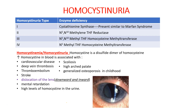Coming to homocystinuria: Type 1 is due to deficiency of cystathionine synthase and presents similar to Marfan syndrome. Type 2 is because of deficiency of N5-N10-methylene tetrahydrofolate reductase. Type 3 is due to deficiency of N5-N10-methylene tetrahydrofolate homocysteine methyltransferase. Type 4 is because of N5-methylene tetrahydrofolate homocysteine methyltransferase. Increased homocysteine in the blood is associated with cardiovascular disease, DVT, thromboembolism, and stroke.